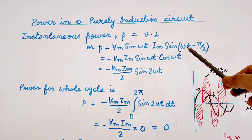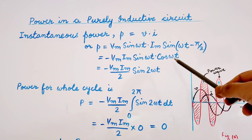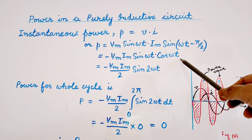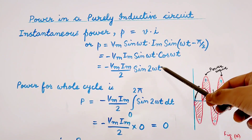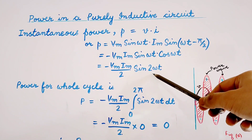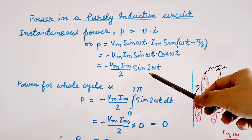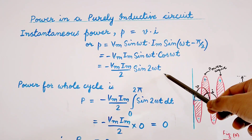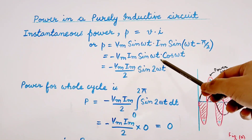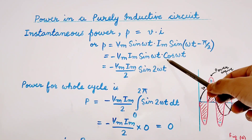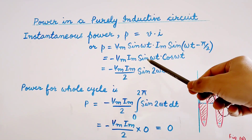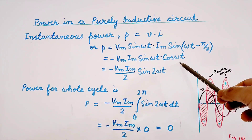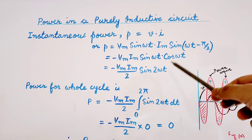Now sin(ωt − π/2) can be written as −cos(ωt). So this comes out to be −VmIm/2 into sin(2ωt), where we have multiplied and divided by 2, using the identity 2 sin(ωt) cos(ωt) = sin(2ωt).